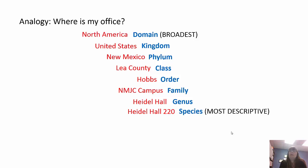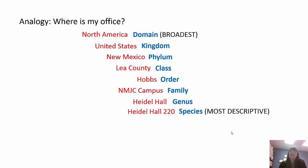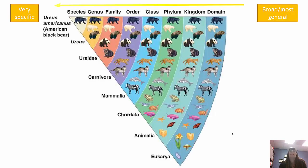Here's a geographic analogy: the domain would be North America, the kingdom would be the United States, the phylum New Mexico, the class Lee County, the order Hobbs, the family NMJC campus, the genus Heidel Hall, and the species Heidel Hall 220 — to be very specific. Here's another example using bears.